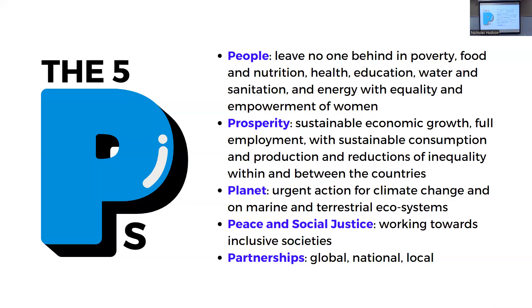How did these 17 goals come about? The United Nations looked at the five P's: People, Prosperity, Planet, Peace and Social Justice, and Partnerships. 'People' means leaving no one behind — covering poverty, food, nutrition, health, education, water, sanitation, and energy, with equality and the empowerment of women. Historically, women have been deprived of several of these rights, and so now we're trying to catch up.